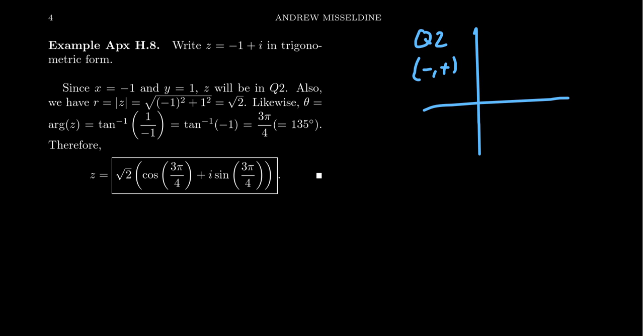We compute the modulus, which is going to be the square root of negative 1 squared plus 1 squared. That'll just simplify to be the square root of 2.